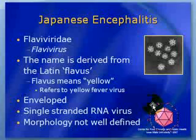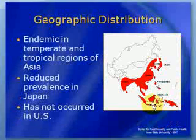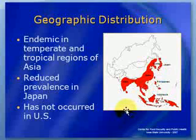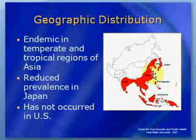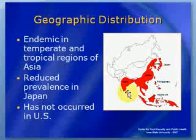25 years ago, Japanese encephalitis was known to be endemic especially in East Asia, particularly in Japan, China, and Korea. In recent years, it has spread widely in Southeast Asia and outbreaks of considerable magnitude have occurred in Thailand, Indonesia, Vietnam, India, Myanmar, and Sri Lanka.